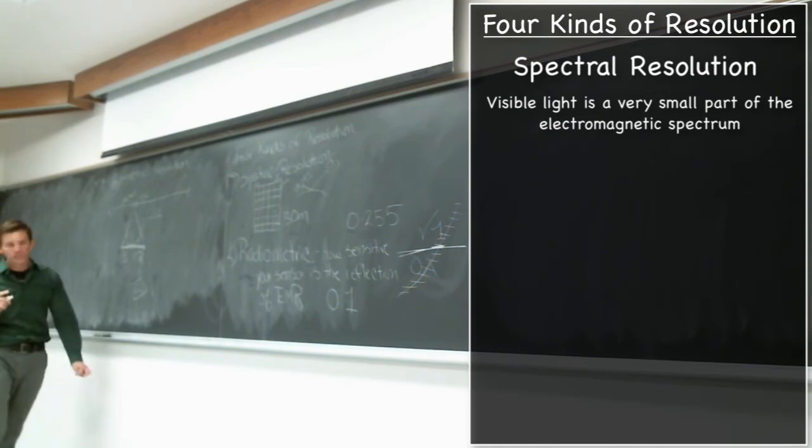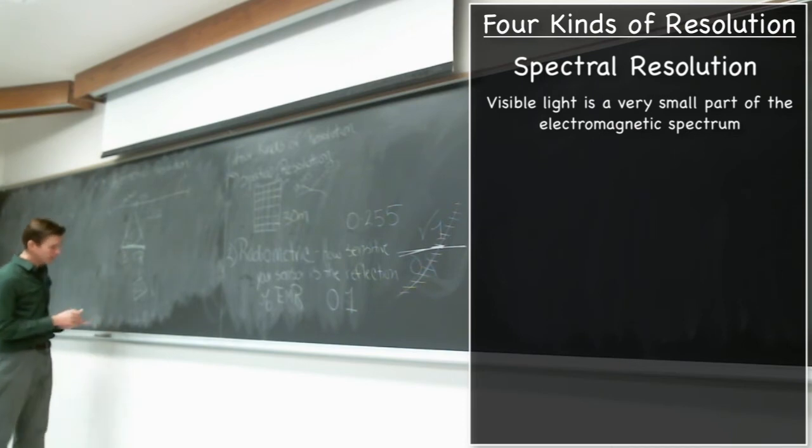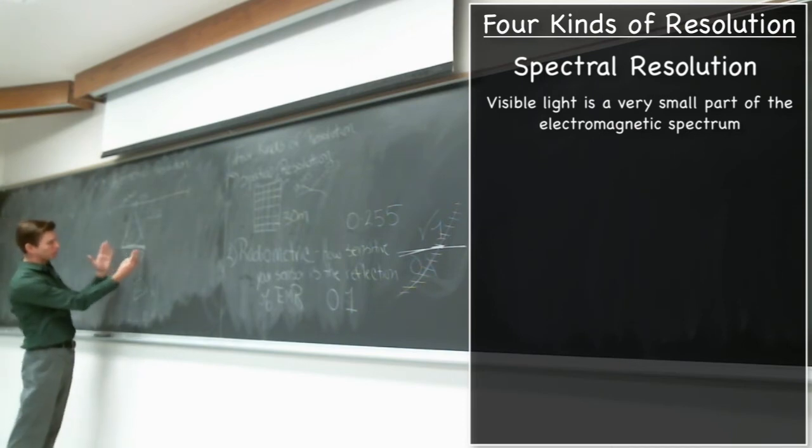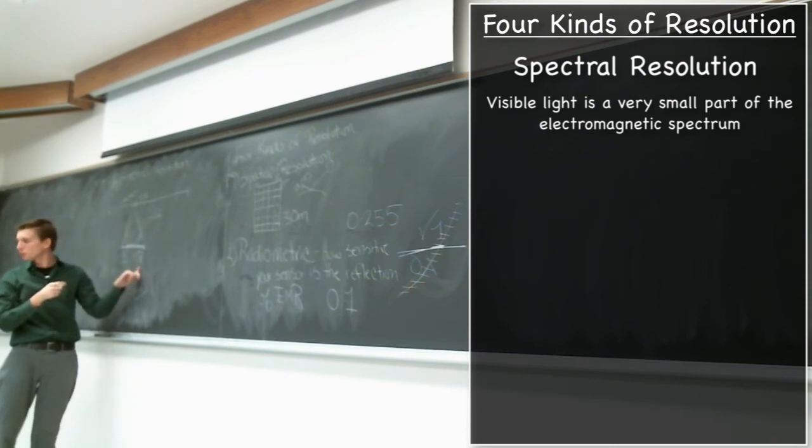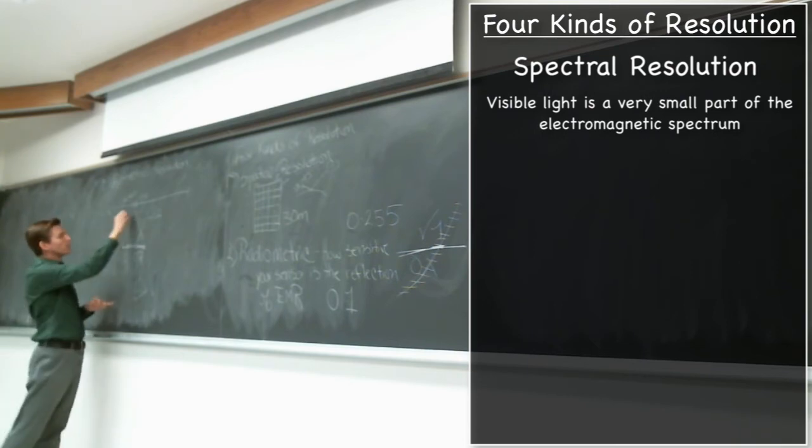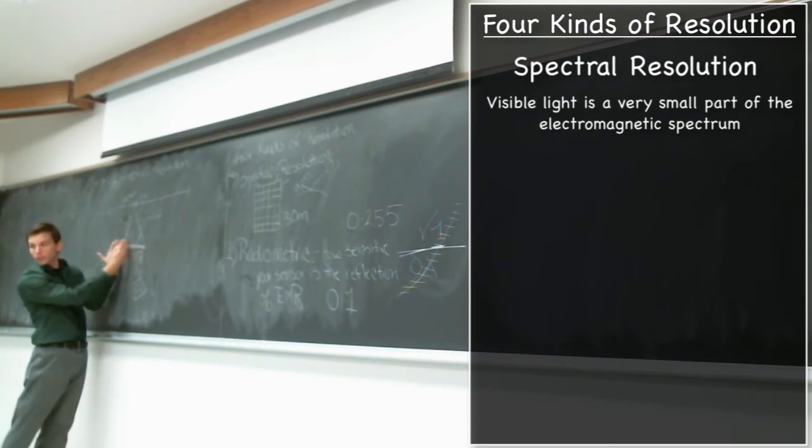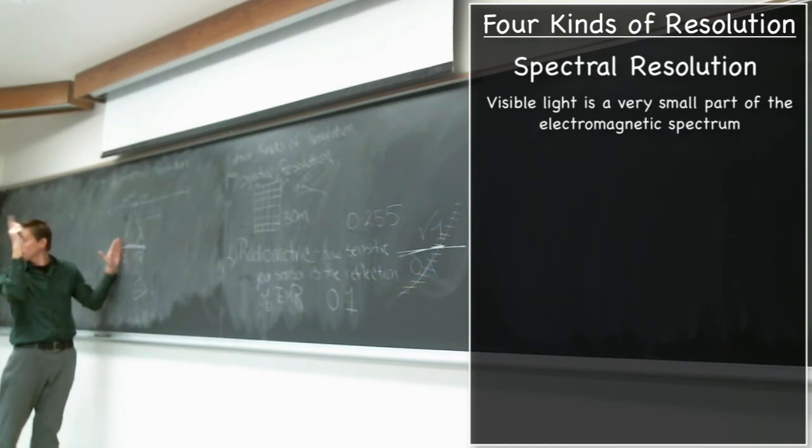We go back to the engineering team and we say, look, your system is capturing this right here and assigning me one value. But what if I really want to know whether it's reflecting in blue or whether it's reflecting in green or whether it's reflecting in red? I want to design a new system that's only looking at the wavelength of electromagnetic radiation between here and here and now give me some value based on that reflectivity.